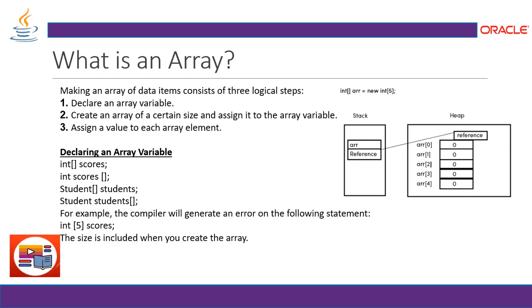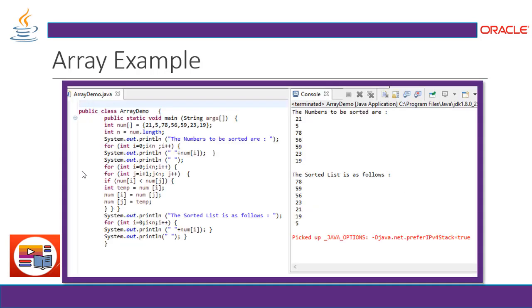The compiler will generate an error on a statement like 'int[5] scores' because the size is included when you create the array — you don't have to mention the size of an array in the declaration. You can mention the size during initialization, not in a declaration. Now let's take a look at the example — I have declared an array variable 'num' with some initialization.